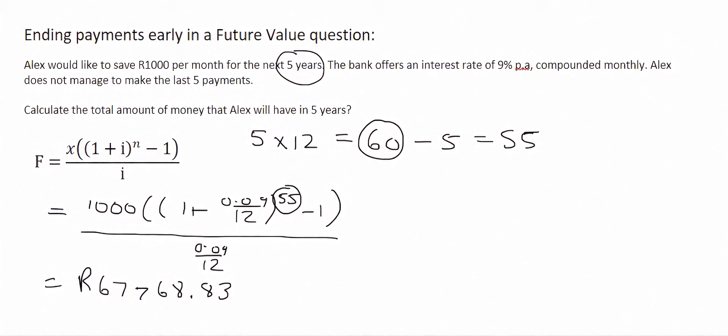However, he can't make the last five payments, but he's still going to leave the money in the bank. What is that money going to do while it's in the bank for five months? Well, it's simply going to grow using the compound interest formula, which is this one over here. And so P is the amount that you have accumulated so far. So that's going to be 67,768.83 Rand, and then we're just going to grow this amount of money for another five months.